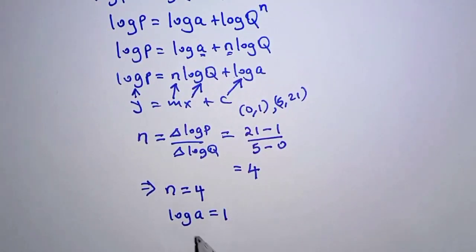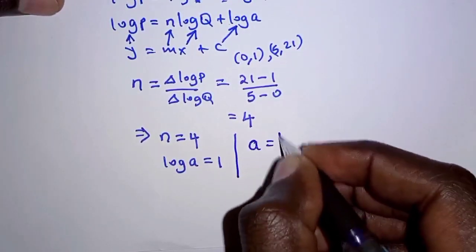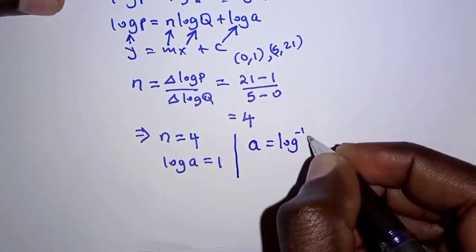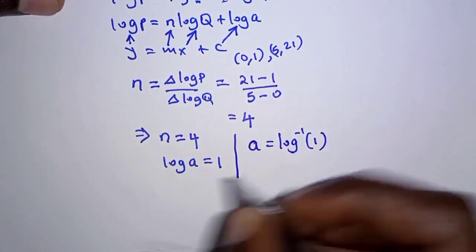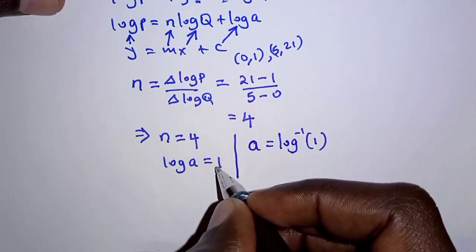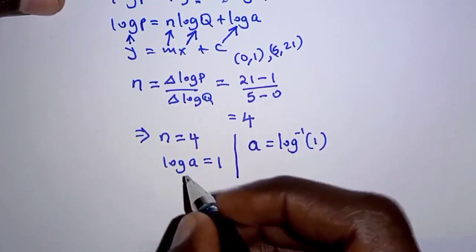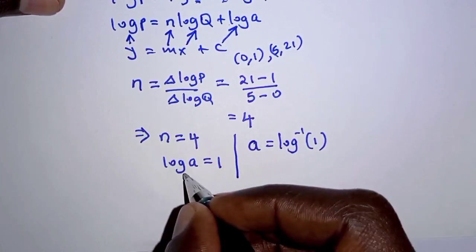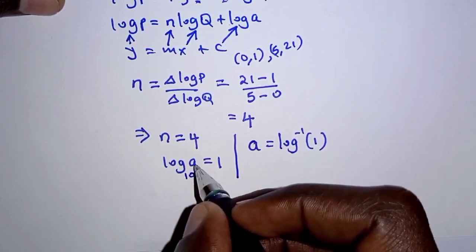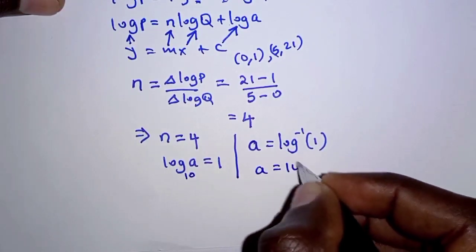So in order to get A, we are going to determine the log inverse of 1. So from this equation A is obtained as the log inverse of 1. And therefore if you work out this, remember this is to base 10. So if you have to determine A, then A becomes 10.